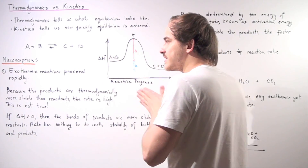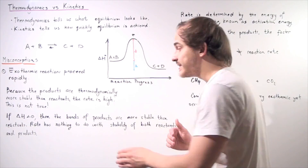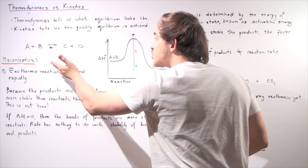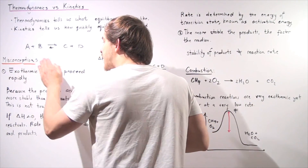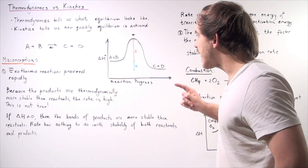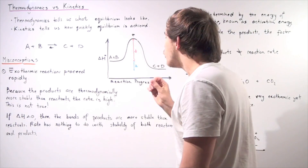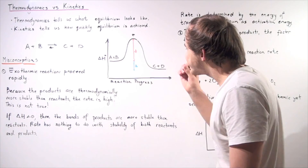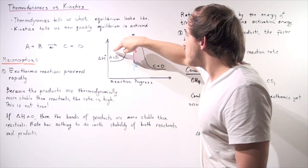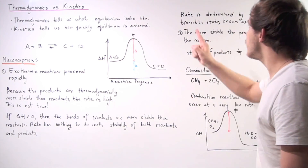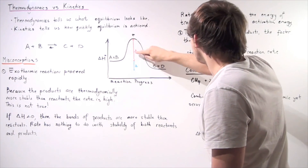If the change in enthalpy is negative, that means the bonds of the products are more stable than the reactants. But rate has nothing to do with the stability of the reactants or the products — rate talks about the stability of our transition state. Exothermic reactions do not necessarily proceed rapidly. If we have a relatively large activation energy, no matter how exothermic our reaction is, our reaction will not take place unless enough energy is input for the reactants to overcome that energy barrier. Rate is determined by the energy of the transition state, given by the red delta H.